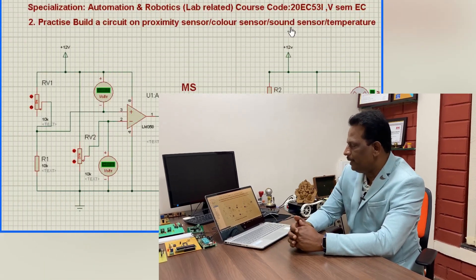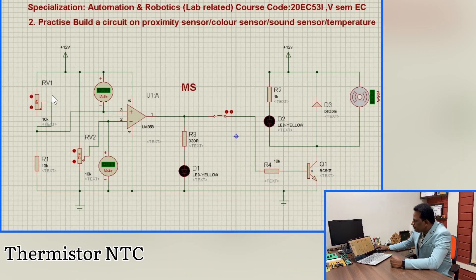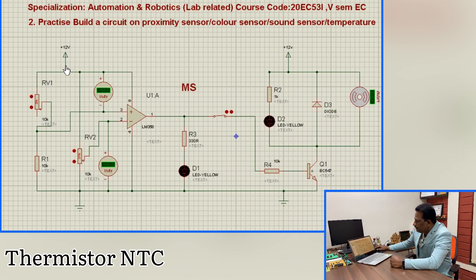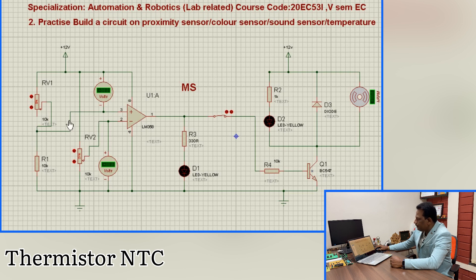Now I am going to explain the same thing in the circuit using simulation. When 12 volts is applied, the current passes through the thermistor. When the thermistor gets heated, its resistance decreases and current starts flowing through the 10K resistor, creating a voltage drop across the 10 kilo ohm resistor. This voltage is applied to pin number 3 of the op-amp, which is configured as a comparator.